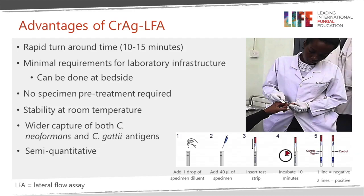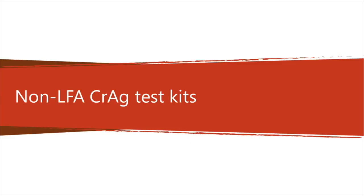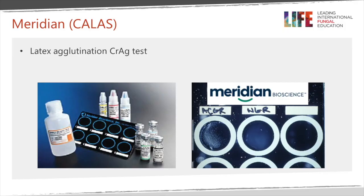The first generations of LFA tests are not quantitative, but more recent ones have a double band showing two different levels of positivity — if the higher band is positive that usually means the patient has meningitis. The Meridian latex agglutination test was the standard test for several decades and is still used; it is helpful but not quite as sensitive as the LFA test, though it does produce a quantitative answer.